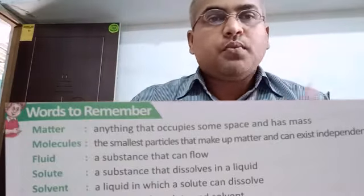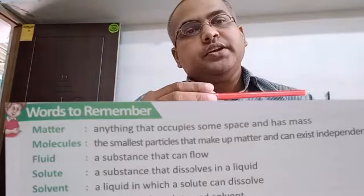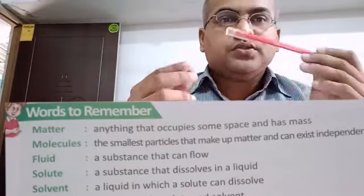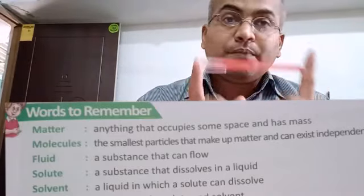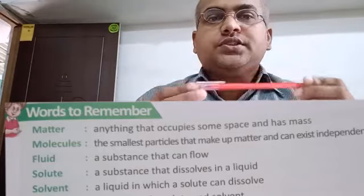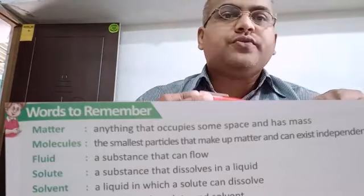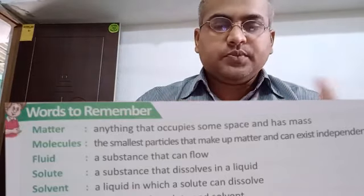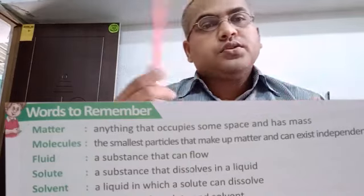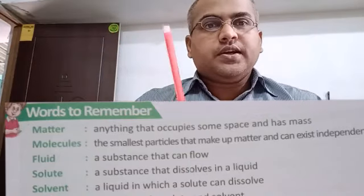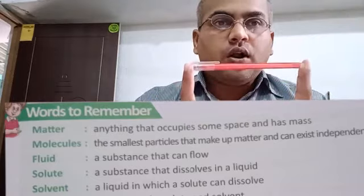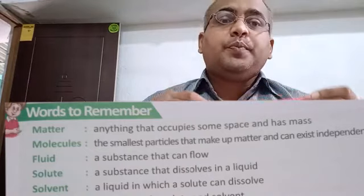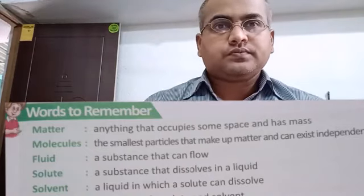Next is molecule. Take this pen — if you break it into smaller and smaller particles, the smallest particle that makes up matter and can exist independently is called a molecule. This pen is made up of plastic, so its smallest particle is a molecule of plastic. The smallest particle that makes up matter is called a molecule, and it can exist independently in nature.